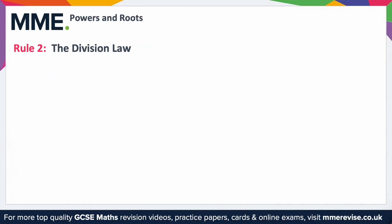The division law is just the opposite of the multiplication law. With the multiplication law we added the powers; here we're going to subtract the powers, because multiplication is the opposite of division. So if we had a to the power of b divided by a to the power of c, it's important that the two base numbers are the same, and b and c can be whatever values. We'd end up with a to the power of b minus c.